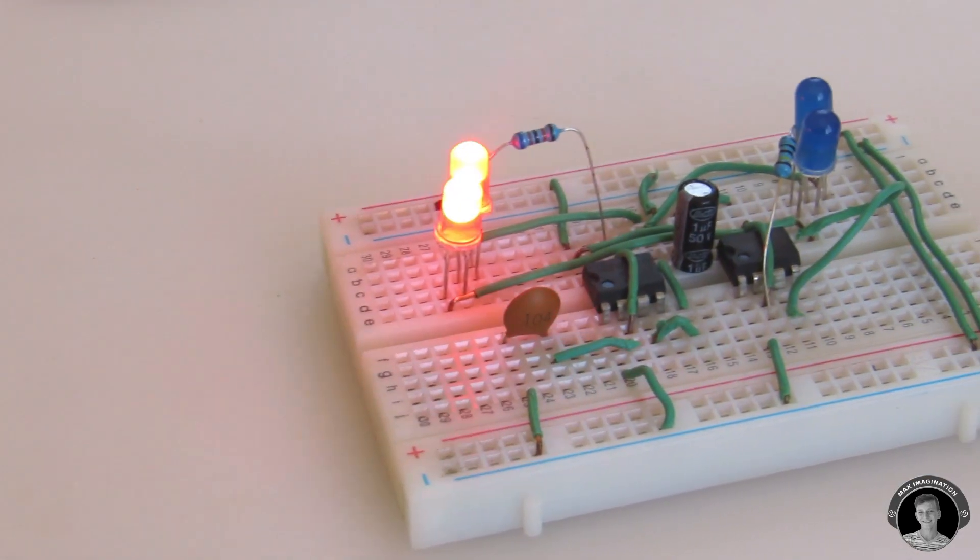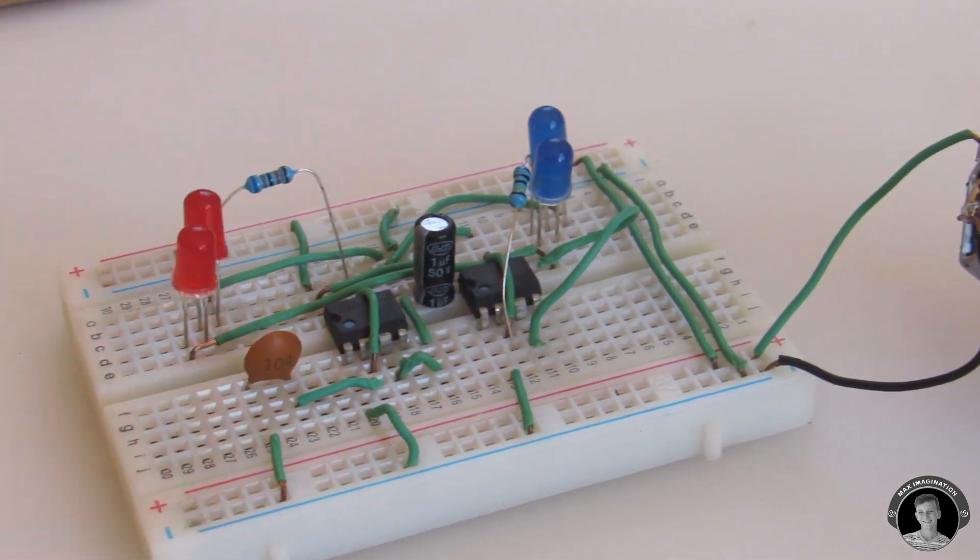Now we're done making the two police light circuits, let's take a look at how the more complex one works.